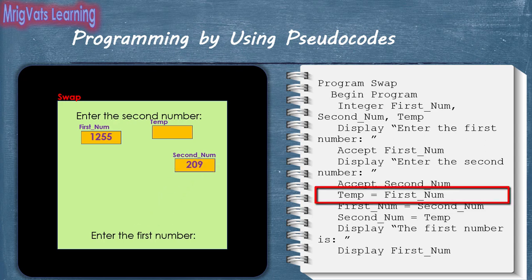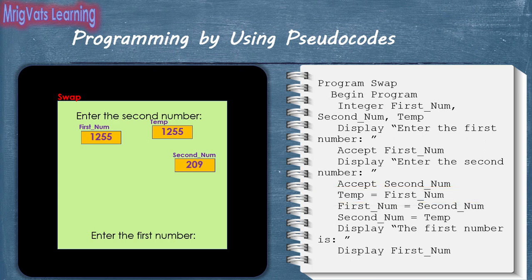With the next statement, the program assigns the value of the first number to the temporary variable temp. Notice that now firstnum and temp have the same value. When the next statement is run, the program assigns the value of secondnum to firstnum. Now both firstnum and secondnum have the same value. However, the original value of firstnum still exists in temp. Notice that if we had not used the temp variable, we would have lost the value of firstnum as soon as this statement ran.